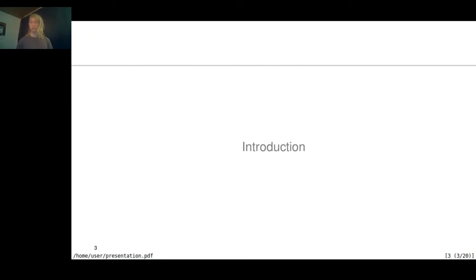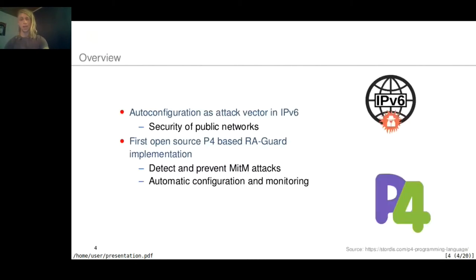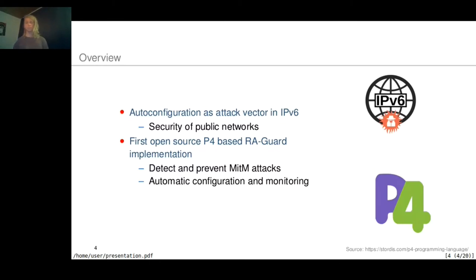This talk is about the auto-configuration of IPv6 and how it can be misused as an attack vector, which particularly affects the security of public networks. To address this problem, we published the first open-source P4-based RA-GUARD implementation that is able to detect and prevent NDP-based man-in-the-middle attacks, and it provides automatic configuration and monitoring.